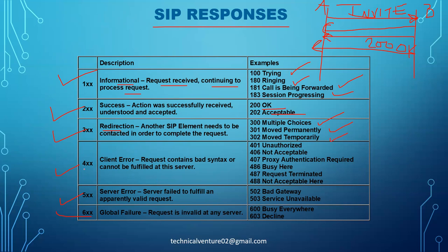4xx messages indicate a client error — the request contains bad syntax or cannot be fulfilled by the server. Examples include 401 Unauthorized, 407 Proxy Authentication Required, 486 Busy Here, and Request Terminated. These all fall under 4xx client errors.